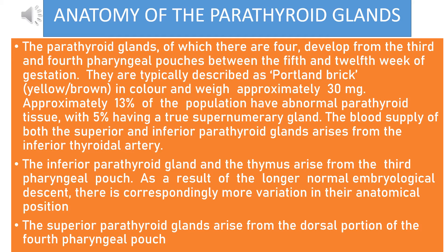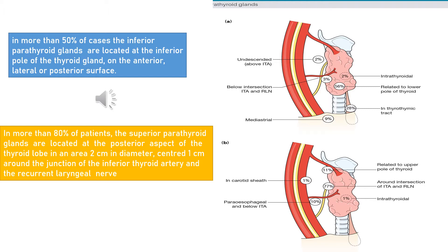The inferior parathyroid glands and the thymus arise from the third pharyngeal part. As a result of the longer normal embryological descent, there is correspondingly more variation in their anatomical position. The superior parathyroid glands arise from the dorsal portion of the fourth pharyngeal part. In more than 50% of cases, the inferior parathyroid glands are located at the inferior pole of the thyroid gland on the anterior, lateral, or posterior surface.